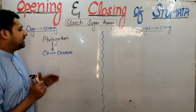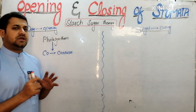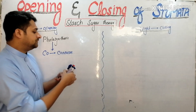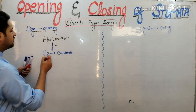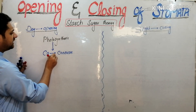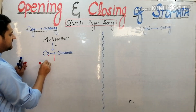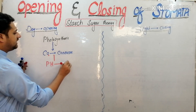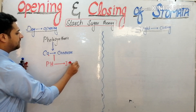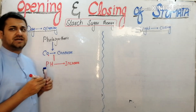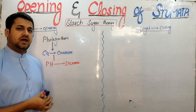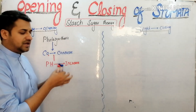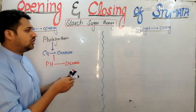Due to carbon dioxide consumption, the hydrogen ion concentration changes. This causes the osmotic pressure in the guard cell to increase, and the pH of the guard cell increases.